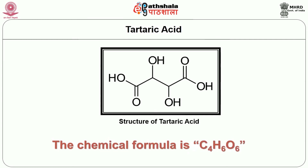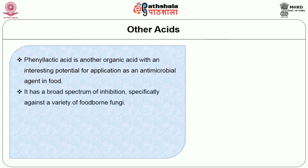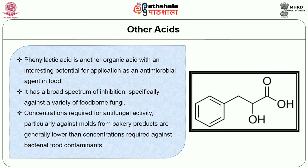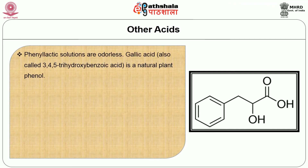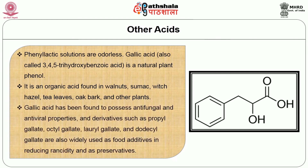Now let's have a look at other types of acids. Phenyllactic acid is another organic acid with an interesting potential for application as an antimicrobial agent in food. It has a broad spectrum of inhibition, specifically against a variety of foodborne fungi. Concentrations required for antifungal activity, particularly against molds from bakery products, are generally lower than concentrations required against bacterial food contaminants. Gallic acid — also called 3,4,5-trihydroxybenzoic acid — is a natural plant phenol. It is an organic acid found in walnuts, sumac, hustle tea leaves, oak bark and other plants. Gallic acid has been found to possess antifungal and antiviral properties, and derivatives such as propyl gallate, octyl gallate, lauryl gallate and dodecyl gallate are widely used as food additives to reduce rancidity and as preservatives.